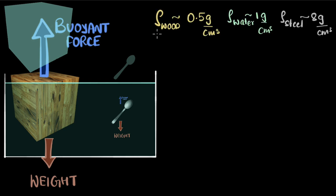If you look at the density of wood, it's about 0.5 grams per cm³, which means that one cm³ of wood weighs 0.5 grams. But water is one gram per cm³ — one cm³ of water weighs one gram. Therefore, since every cm³ of water weighs one gram and every cm³ of wood weighs only half a gram, clearly this entire shape of water will weigh more than that of the wood. So because wood has smaller density than water, the displaced water will have more weight, and therefore the buoyant force will be larger.